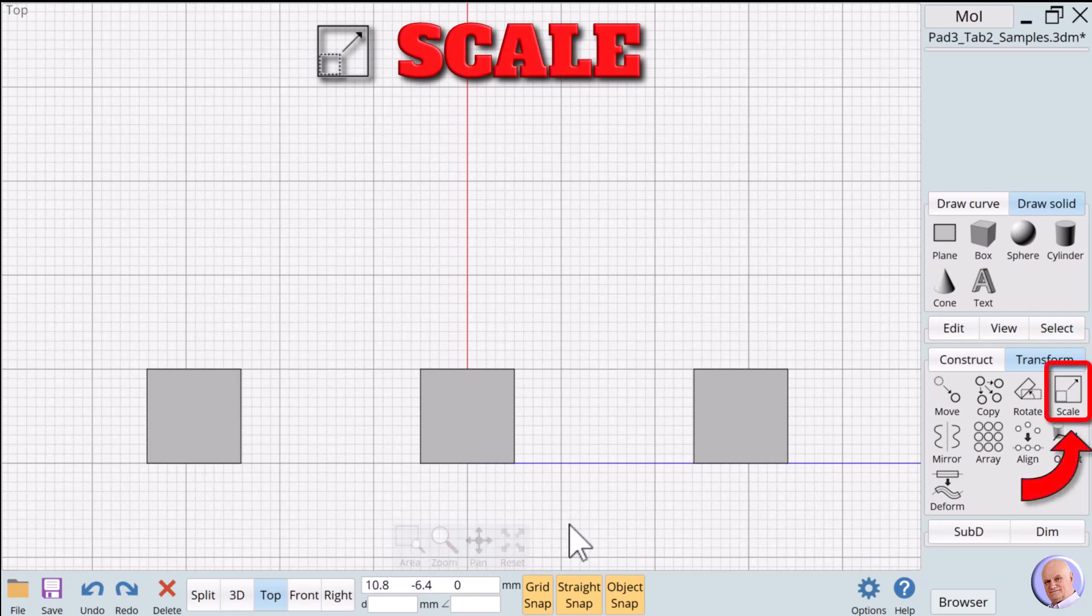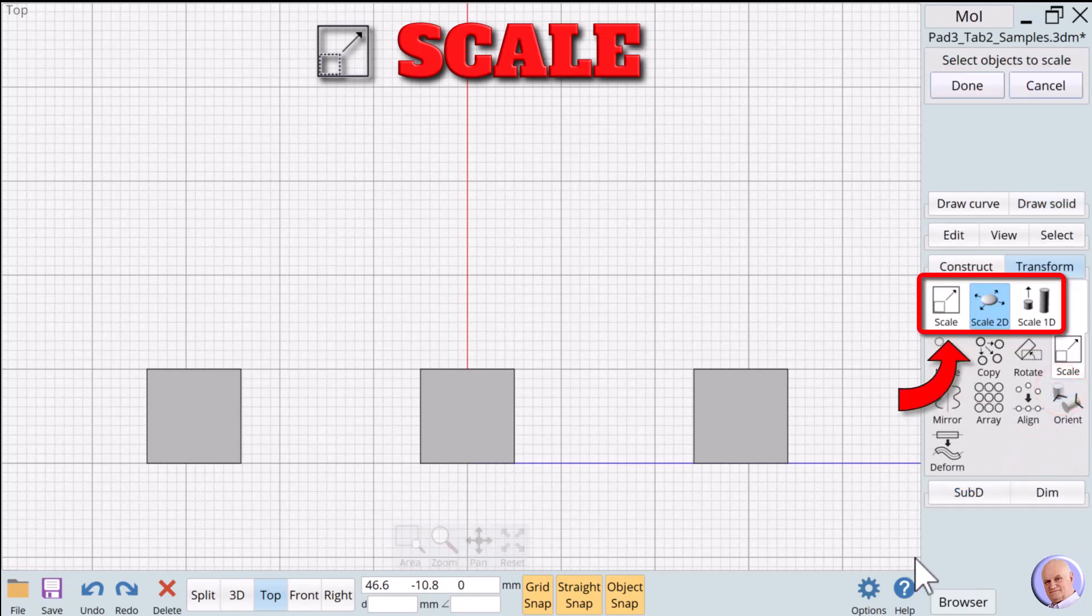The scale group. After 3D printing a design, we sometimes find that our original dimensions are either too big or too small. Scaling can be done by the slicers for 3D printing, but it's much more precise to go back into our design and use one of the scale verbs in moment of inspiration to make the necessary changes. Clicking on the scale group button reveals three scaling methods in moment of inspiration.